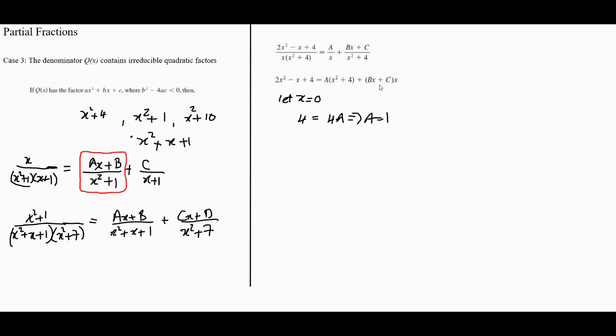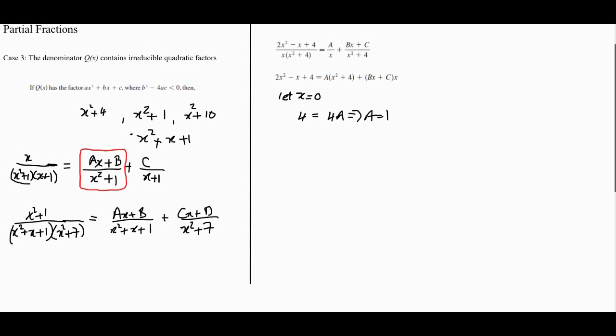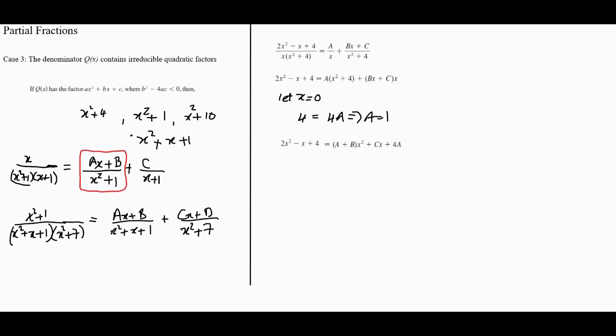So we've got one of our values. Now, the next thing we want to do is move to the comparison of coefficients. After collecting terms and opening up all the brackets, we end up with A + Bx² + Cx + 4A. Comparing coefficients, we get A + B = 2, C = -1, and 4A = 4.